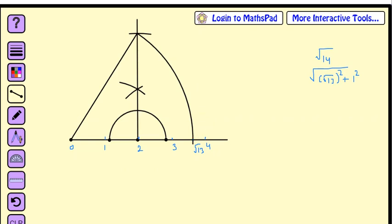Base is root 13, so my distance would be root 13 this much, and perpendicular would be 1 unit. So on root 13, I will construct 90 degree and go for 1 unit. Is this part clear?